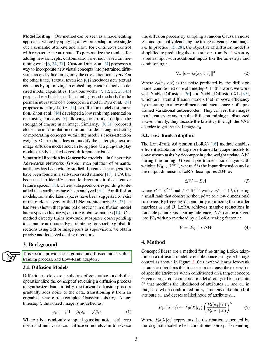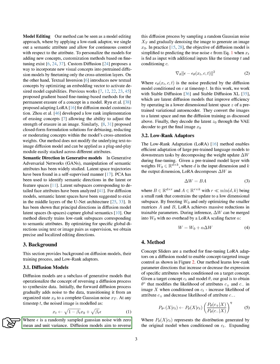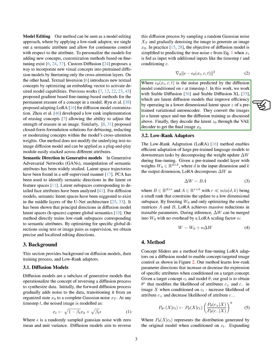Let's delve into the background of diffusion models, their training process, and low-rank adapters. Diffusion models are a type of generative model that use the idea of reversing a diffusion process to create data. The forward diffusion process slowly adds noise to the data, changing it from an organized state x_0 to complete Gaussian noise x_t. The goal is to reverse this process by sampling a random Gaussian noise x_t and gradually removing the noise to generate an image x_0. In practice, the model is simplified to predicting the true noise when x_t is used as input with additional inputs like the time and conditioning. We use Stable Diffusion and Stable Diffusion XL, which are latent diffusion models that enhance efficiency by working in a lower-dimensional latent space of a pre-trained variational autoencoder.